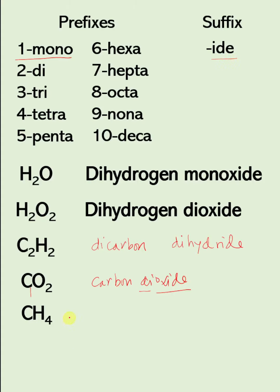How about this one? This one is carbon — again, it's one carbon. Again, when the first element has one atom, we don't use the prefix mono. Then we have four hydrogens. For four, we use tetra, and the element here is hydrogen, so that will be tetrahydride. So this compound is carbon tetrahydride.